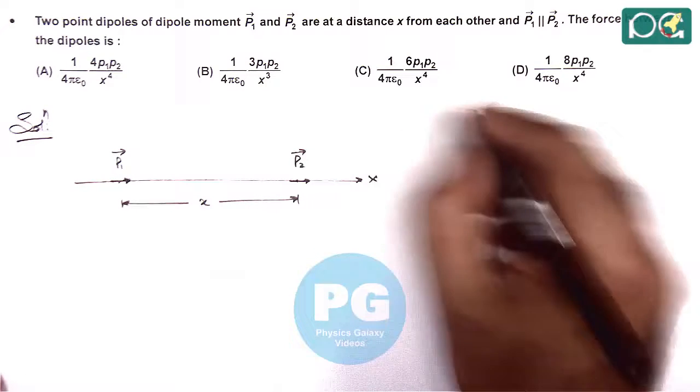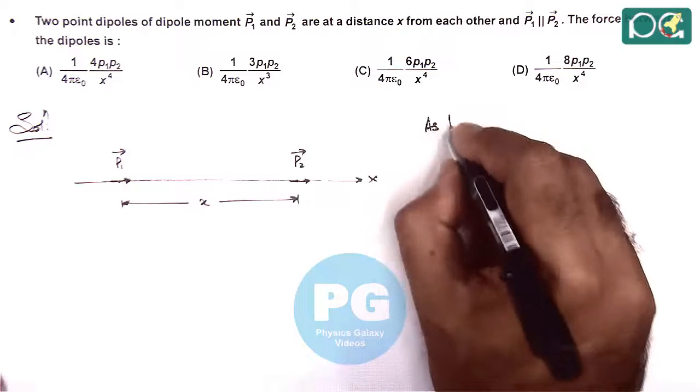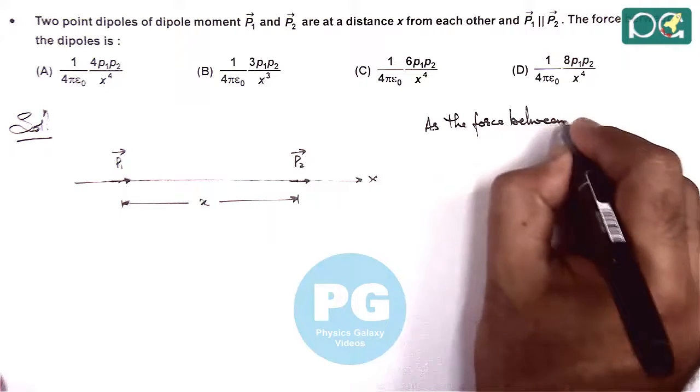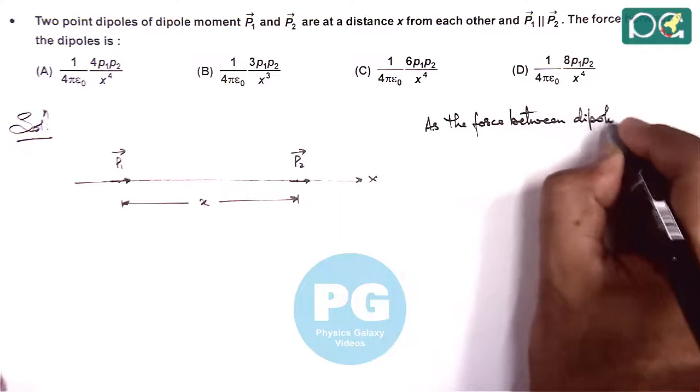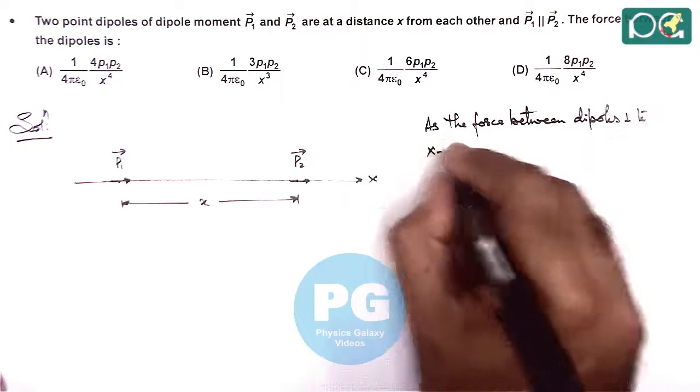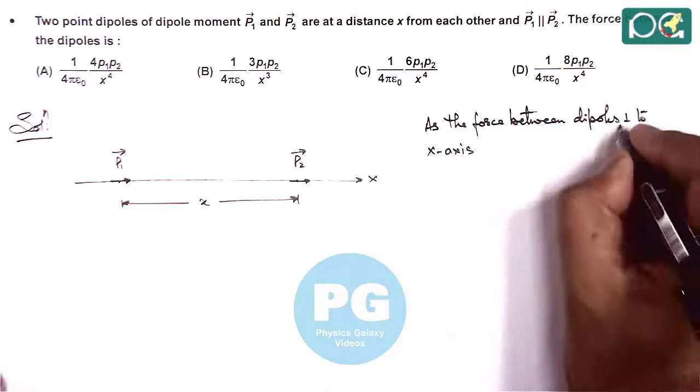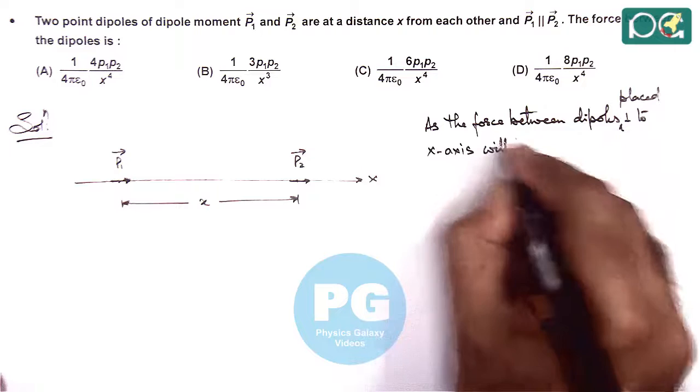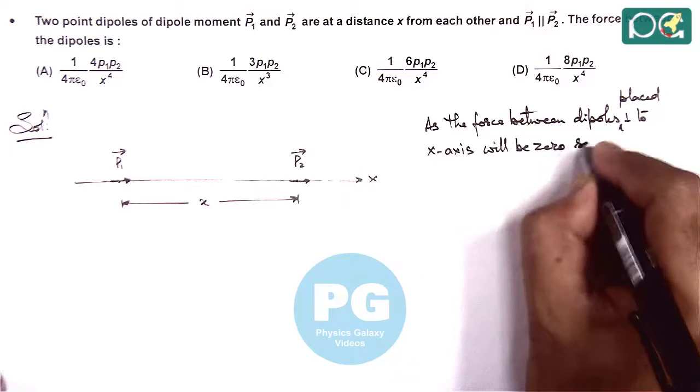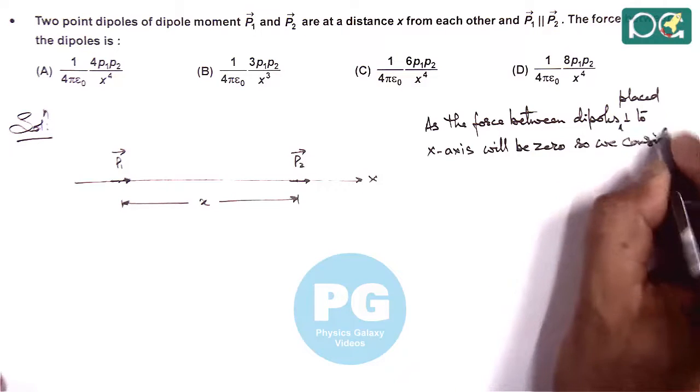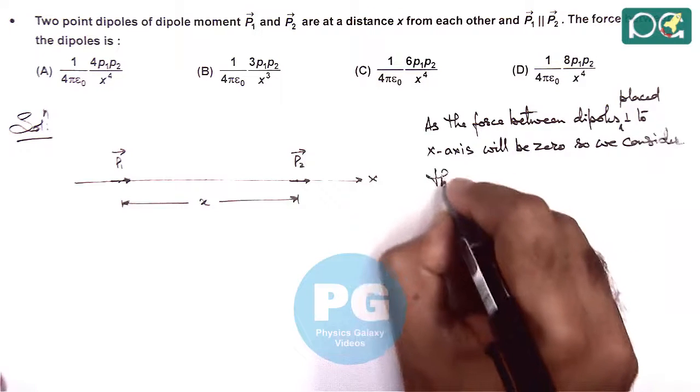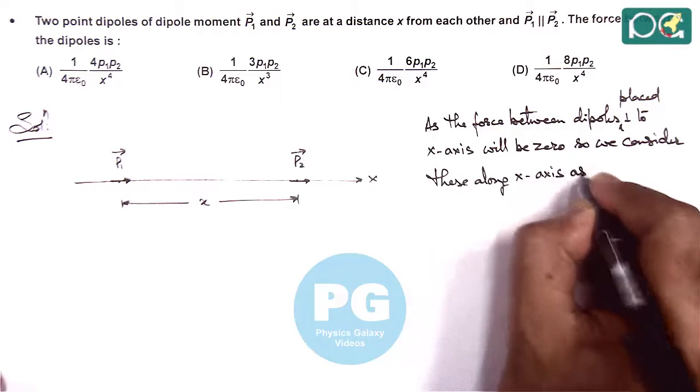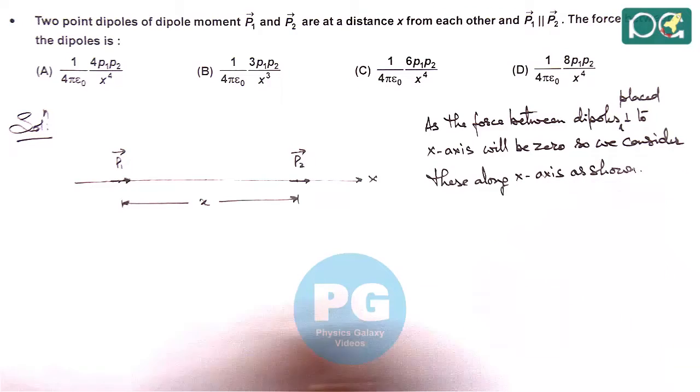So we consider these two dipoles are placed along the x-axis. We can also write as the force between dipoles placed perpendicular to x-axis will be zero. So we consider these along x-axis as shown.